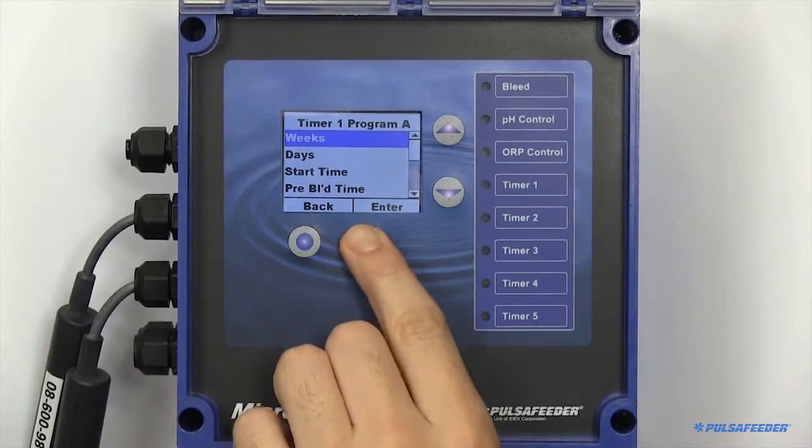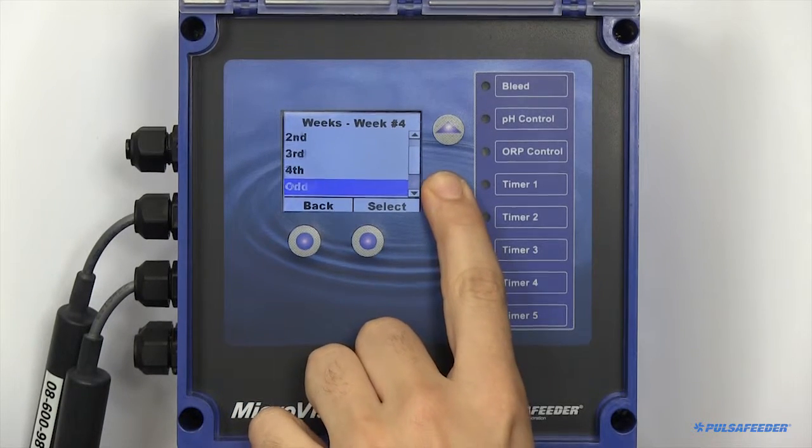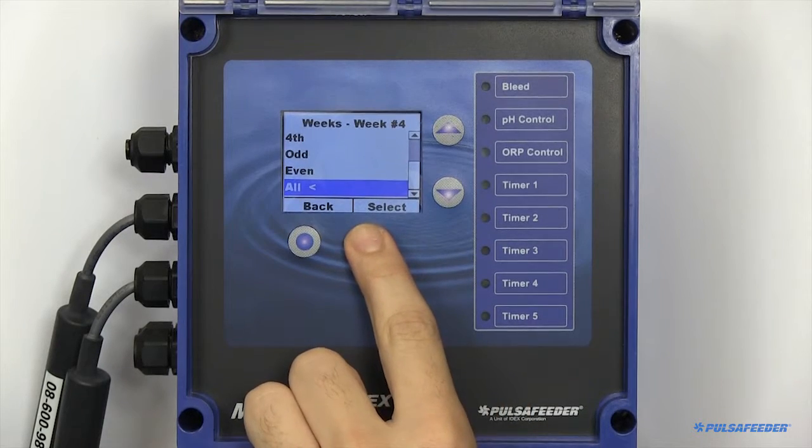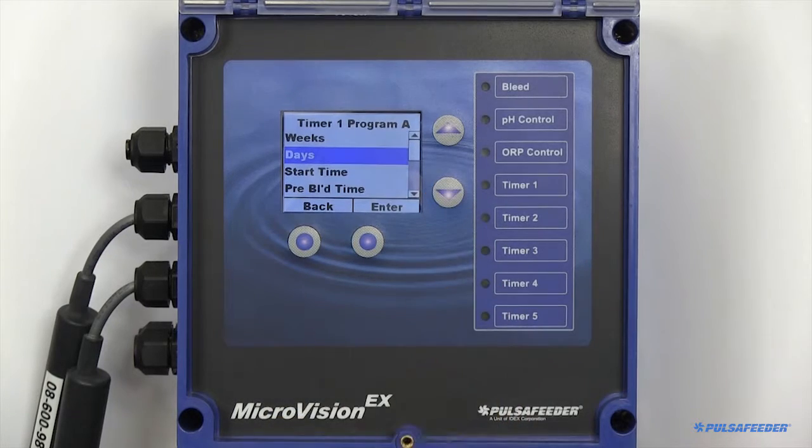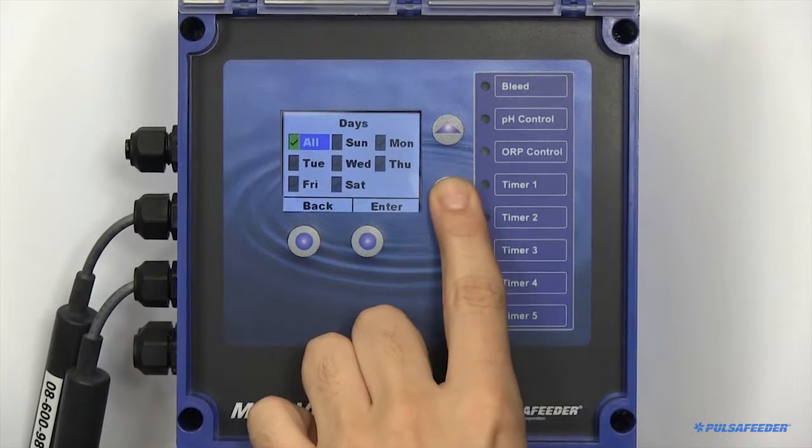A 28-day timer can be set to run on any individual week, odd weeks, even weeks, or every week. Any combination of weekday can also be selected. You may choose all of the days or a single day.